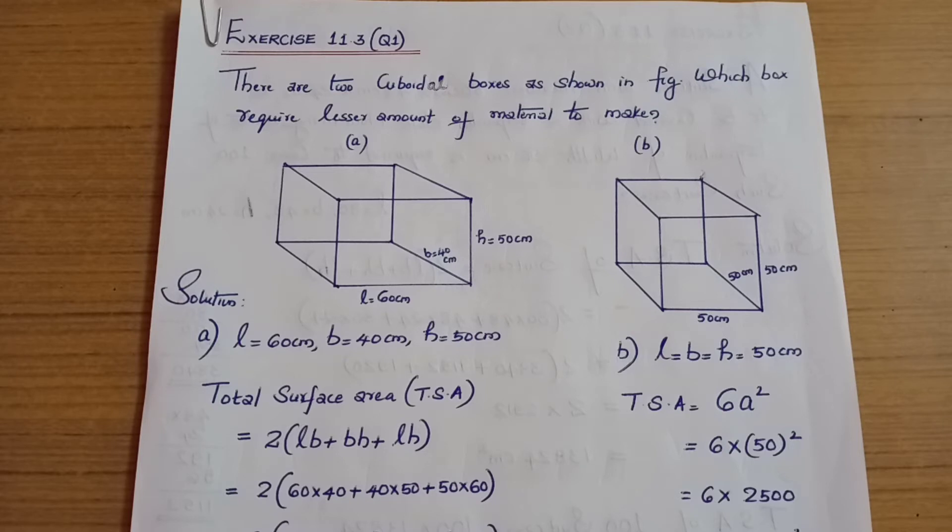Total surface area for the rectangular shape: length is 60cm, breadth is 40cm, height is 50cm. Total surface area calculation.